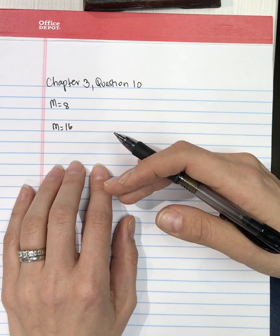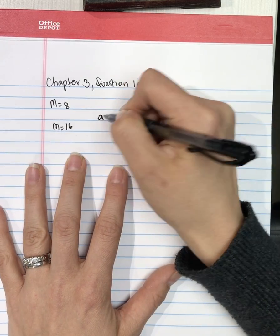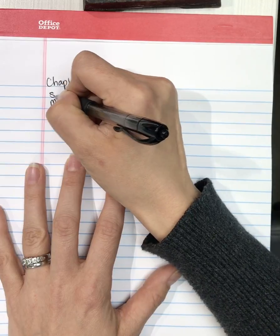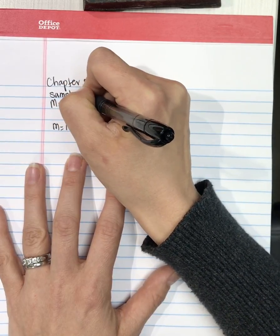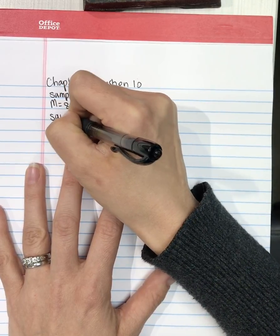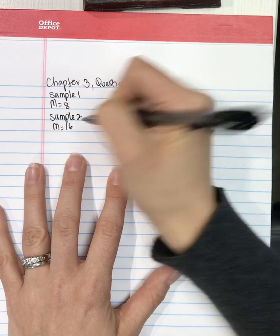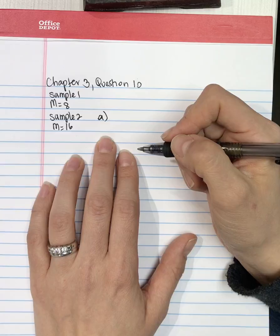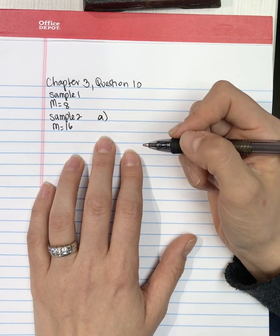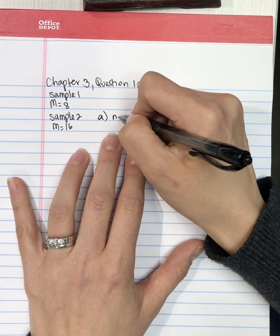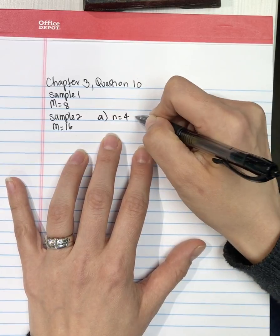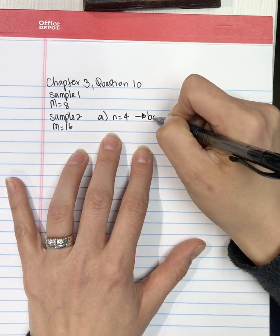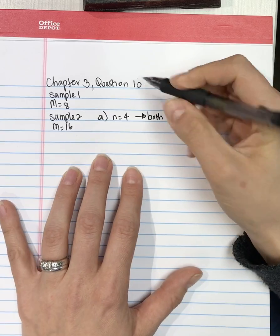So this is sample one, this is sample two. Question 10a asks what is the mean for the combined set if both of the original samples have n equals 4 scores for both.